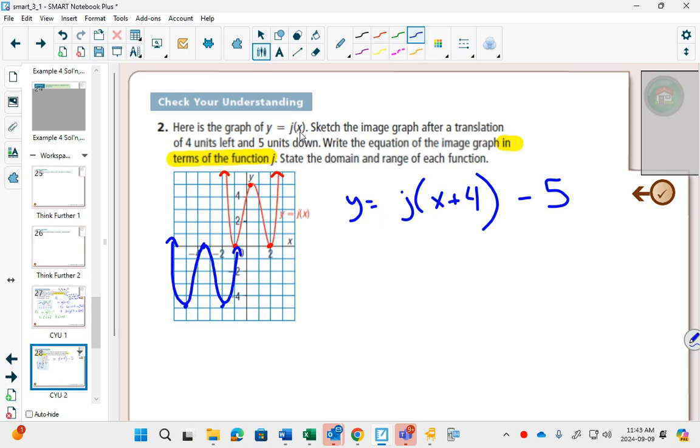And then outside of the function, going down, I'll have minus 5. So anything that's inside the function is where the x was originally. The x is inside j of x, so everything inside the function j will move it left, right, and anything outside will move it up and down.